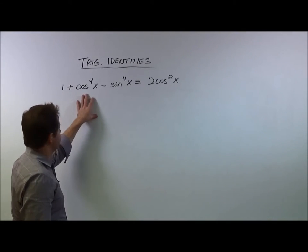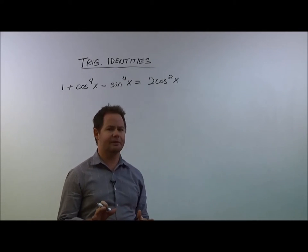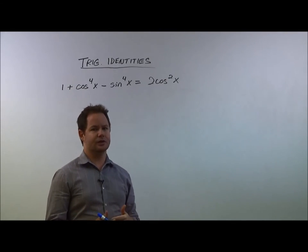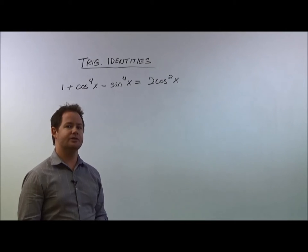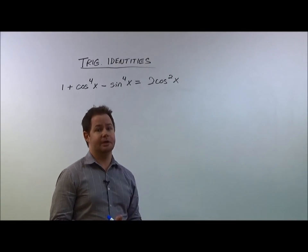So here we have cosine to the fourth of x and sine to the fourth of x. Now right off the bat, when I look at those, I say to myself, okay, I don't really know an identity for cosine to the fourth. That's a pretty high exponent, but I do know that I have seen cosine squared and sine squared in some of the identities.